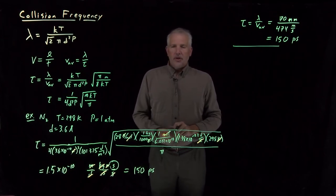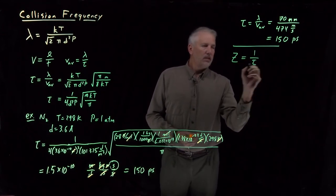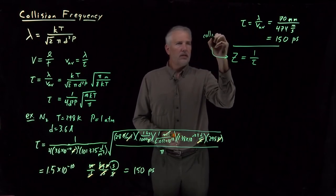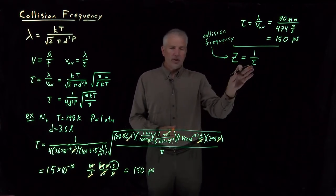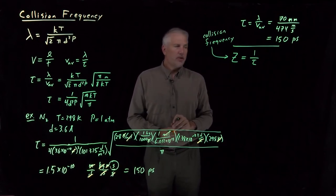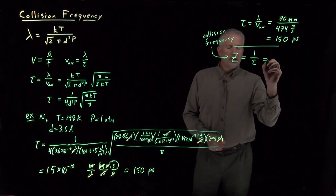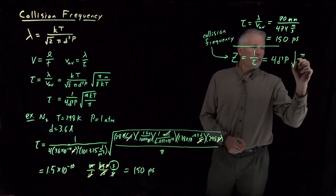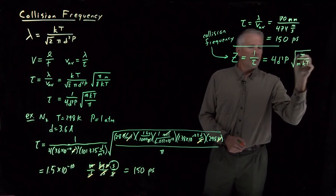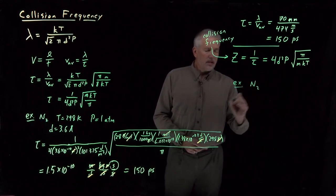Often more useful than the average time between collisions is the collision frequency: how many times per unit time does a molecule experience a collision? The collision frequency is defined as one over the average collision time. So one over the expression for tau gives the collision frequency: the 1 over 4d²P becomes 4d²P in the numerator, and the square root inverts to give the square root of pi over mkt.